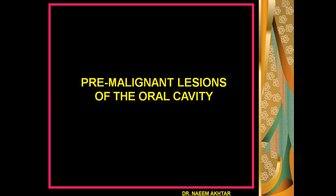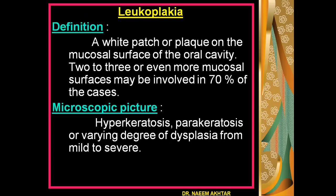The pre-malignant lesions of the oral cavity: number one is leukoplakia. Leukoplakia is a white patch or plaque on the mucosal surface of the oral cavity; two, three, or even more mucosal surfaces may be involved in around 70 percent of cases. Under the microscope we can have hyperkeratosis, parakeratosis, or sometimes varying degrees of dysplasia from mild to severe in histopathological lesions.